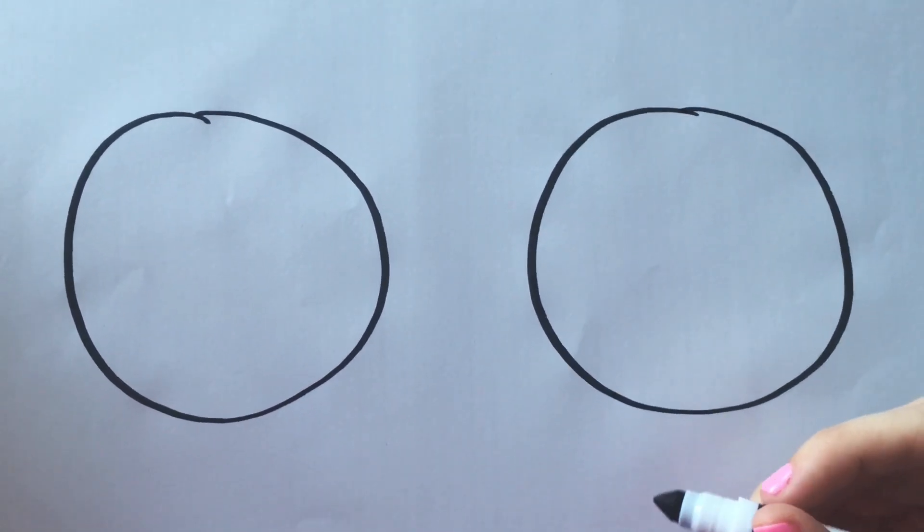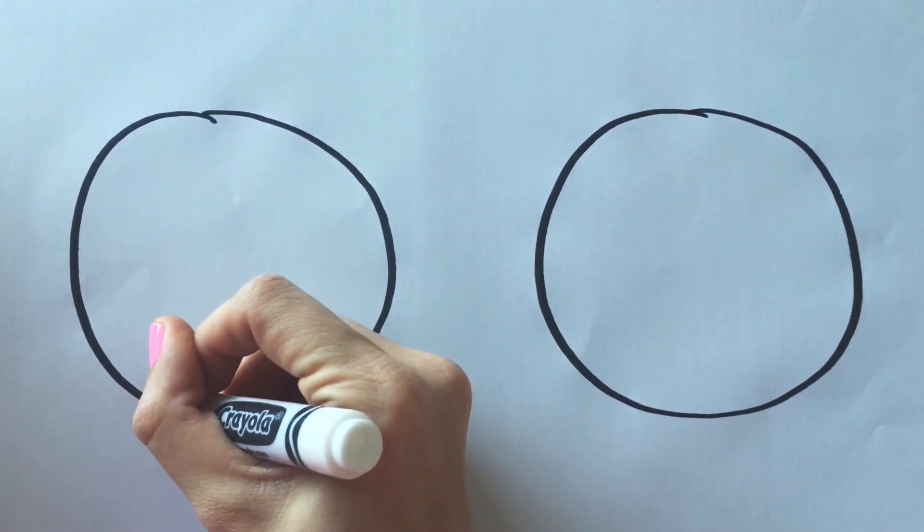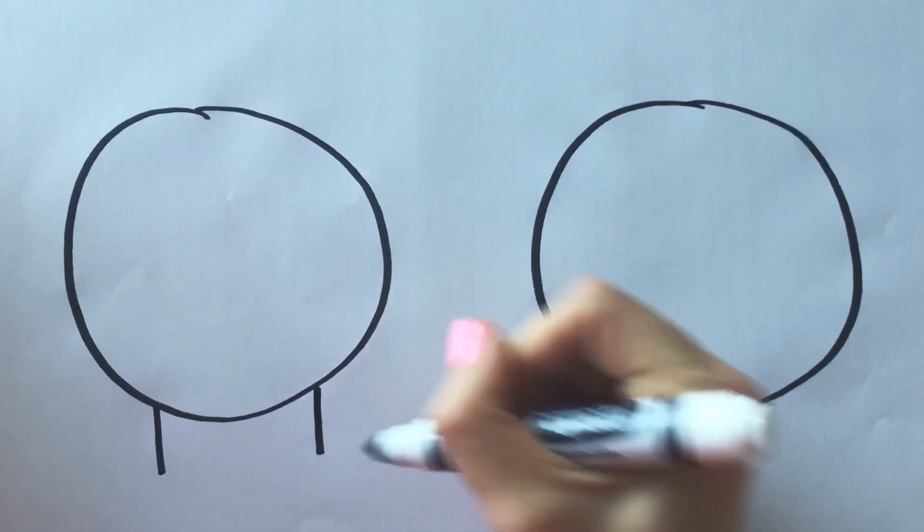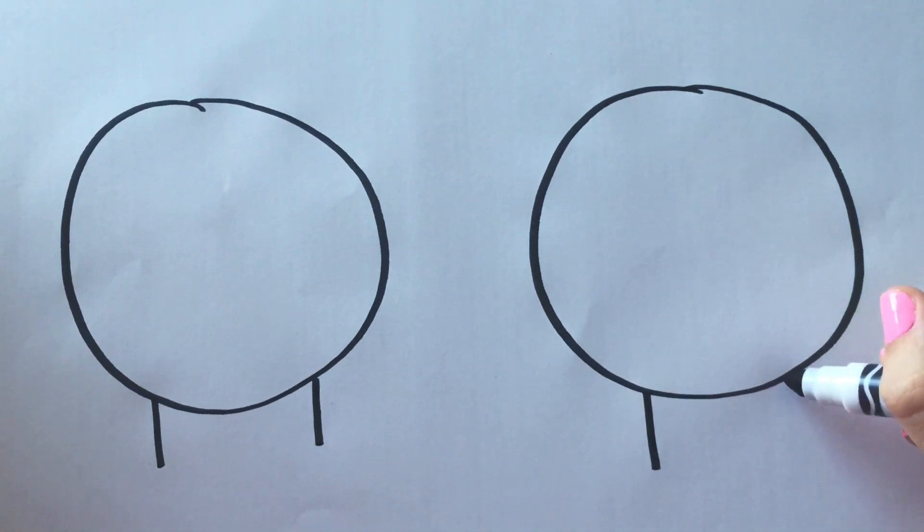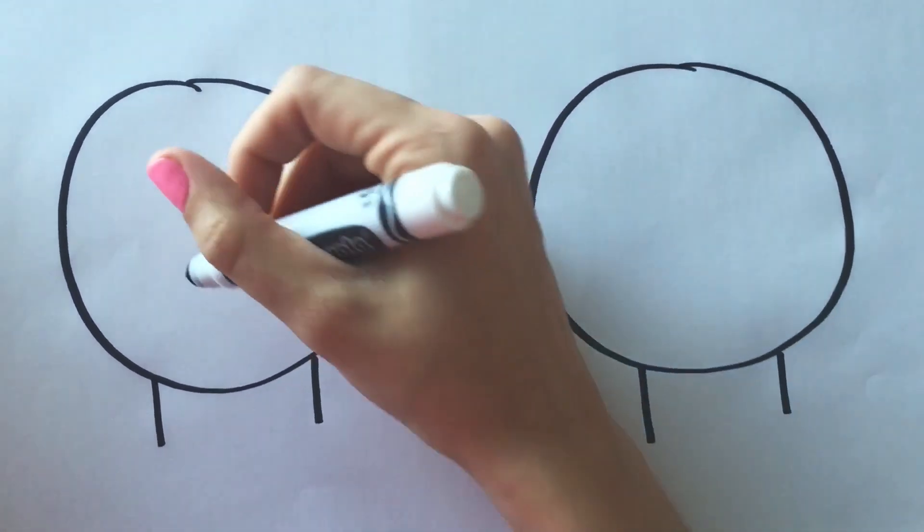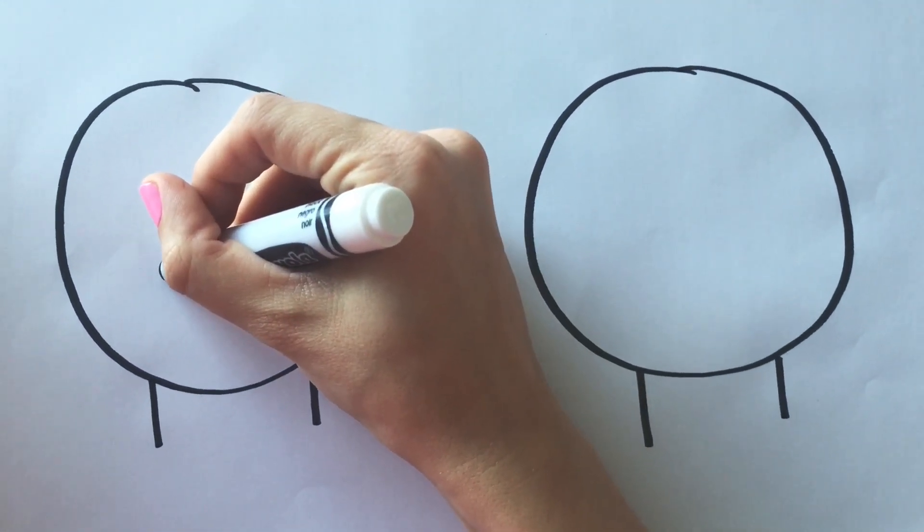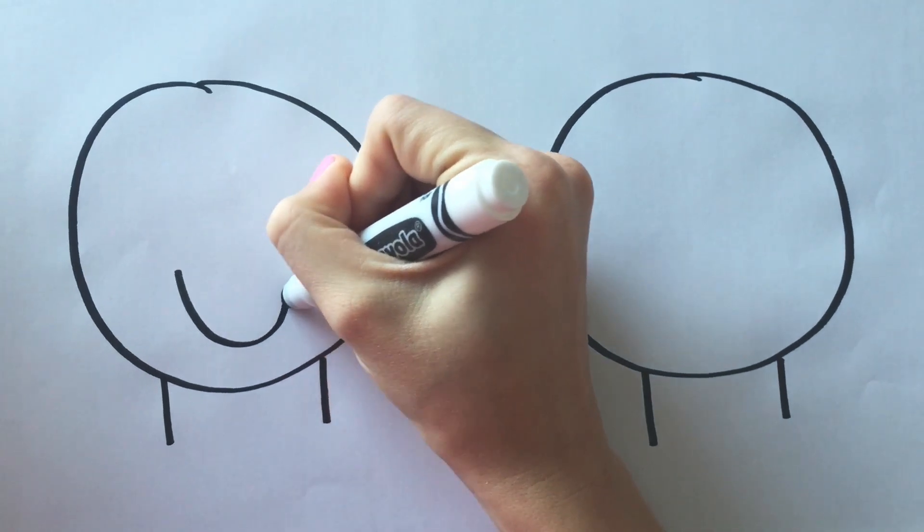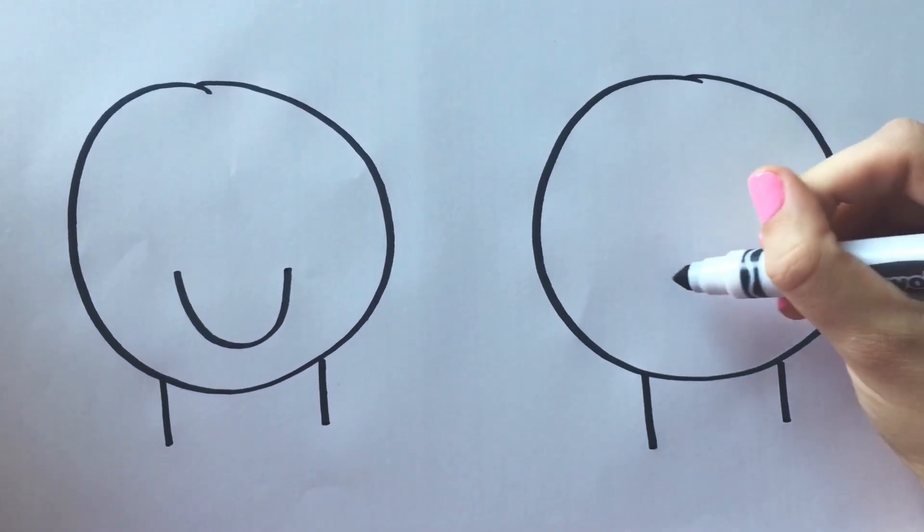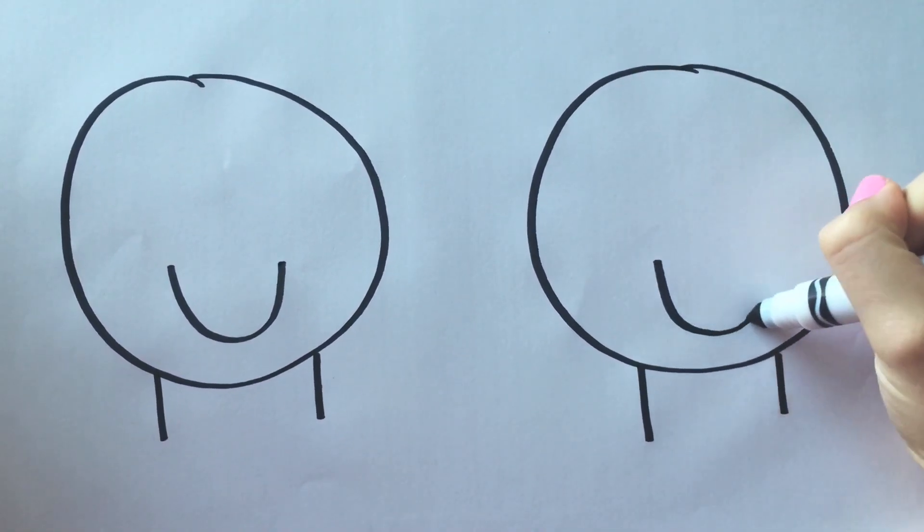Now the next thing we're going to do is put two lines at the bottom, like that, for the neck. Then the next step is to draw a big dip like this. And add another one there for the smile.